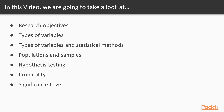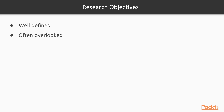We'll also talk about significance level, because we have to have a cutoff in terms of when something becomes statistically significant. And then finally, we'll talk about the outcomes — when you are able to find a statistically significant result, when you don't, and what that could potentially mean. Let's begin by talking about research objectives.